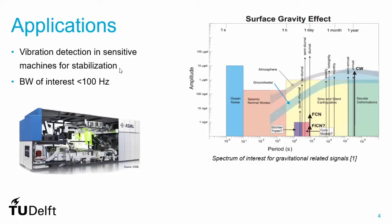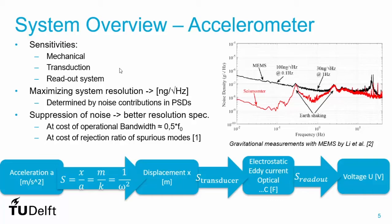In terms of the system overview, we go from the measurement — the acceleration — to the displacement domain. We have a mechanical sensitivity defined mainly by omega squared, which is the resonant frequency. In a relative open-loop mass-spring system based accelerometer, this is determined by the ratio of mass over stiffness. Then we have the transducer to the electrical domain, which can be electrostatic, eddy-current based, or optical.